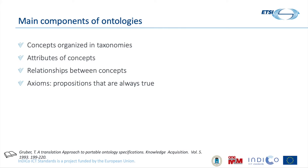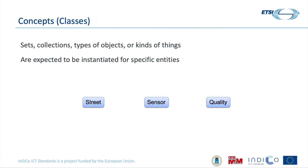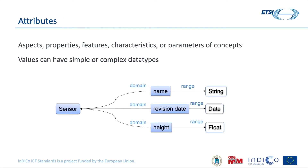The main components of ontologies are the concepts, which are usually organized in taxonomies, attributes of these concepts, relationships between concepts, and axioms. Concepts, also known as classes, are sets or types of objects that describe types of things. Usually we expect these concepts to be instantiated for specific entities — generic concepts such as streets, sensors, or qualities. Attributes allow me to further describe these concepts: these are properties, features, and characteristics with values that have either simple or complex data types. For example, we could say about a sensor that it has some name, some revision date, or some height.